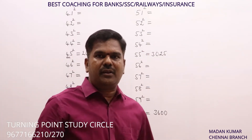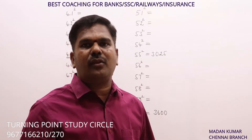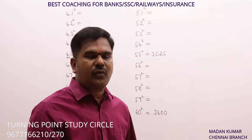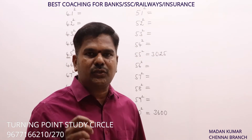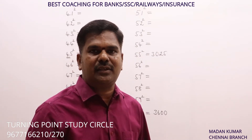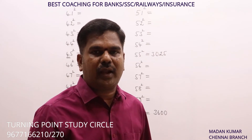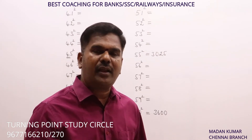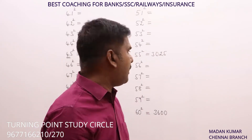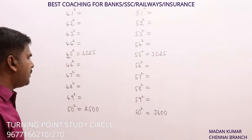From 32 square onwards till 99 square, you will have 4-digit values. 31 square is the last 3-digit square value. From 100 square onwards till 316 square, we have 5-digit values. Now, how to remember from 41 square onwards.